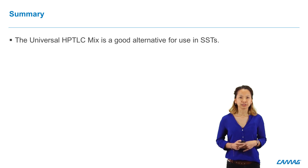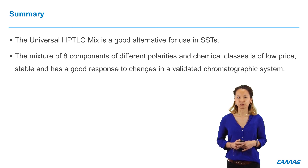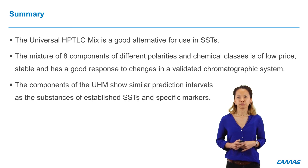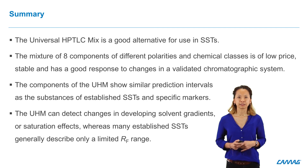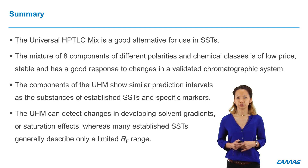Today we have seen that the universal HPTLC mix is a good alternative to current SSTs. The mixture of eight components of different polarities and chemical classes is low in price, stable and has a good response for changes in the validated chromatographic system. When comparing to current SSTs, the components of the UHM show similar prediction intervals as the substances of established SSTs and specific markers. The UHM can detect changes in developing solvent gradients or saturation effects, whereas many established SSTs generally describe only a limited RF range. If you want to learn more about the UHM, please look at our two articles published in the Journal of Chromatography A.